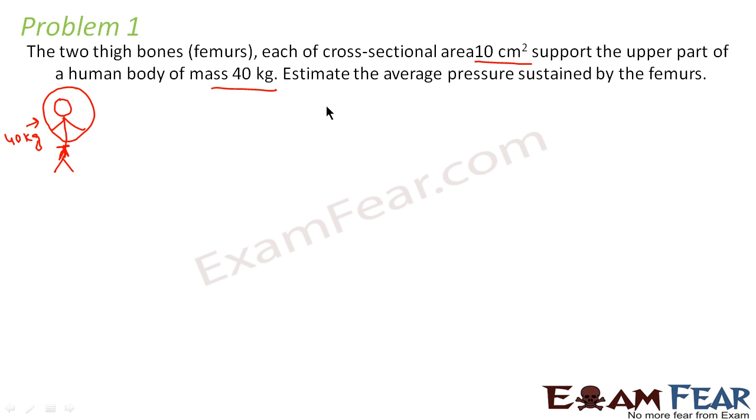So the question asks, what is the average pressure sustained by the femurs? Here we can see that mass is given as 40 kg. Each area is given as 10 cm². 10 cm² is the area for each thigh bone.